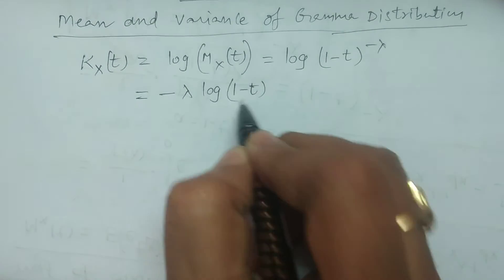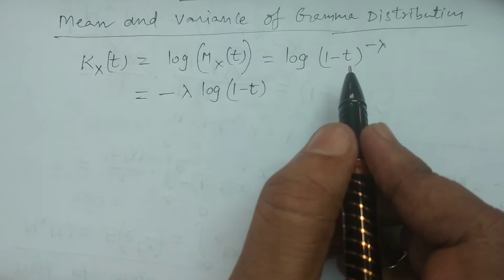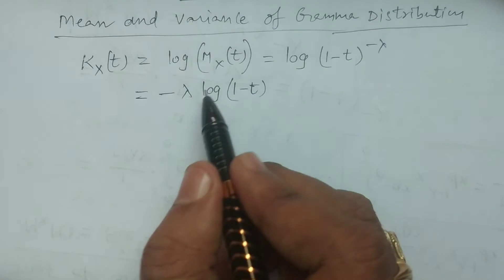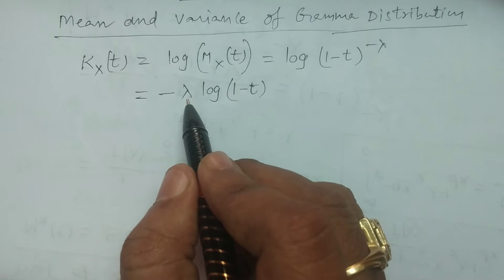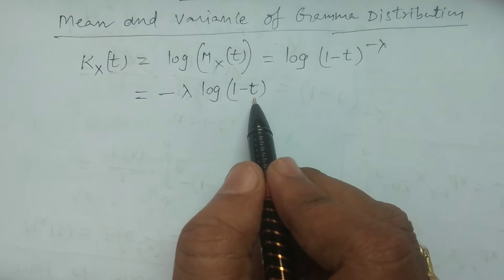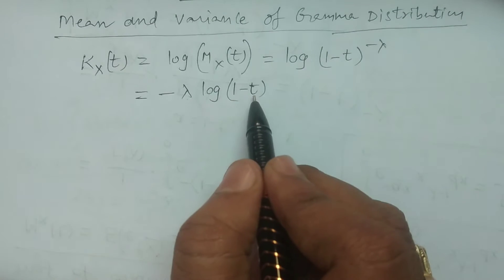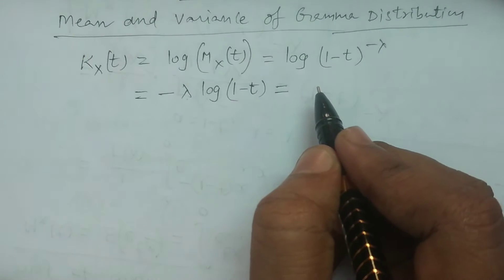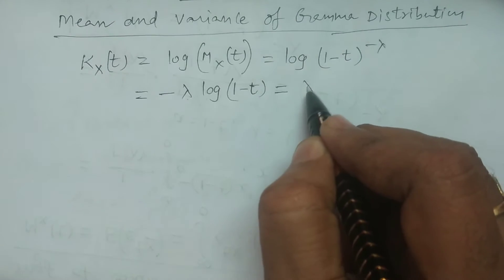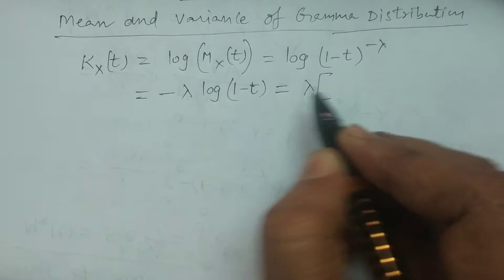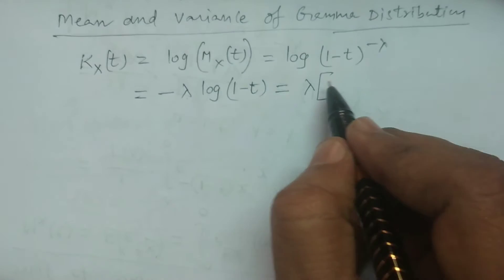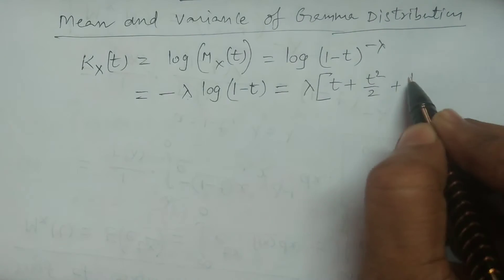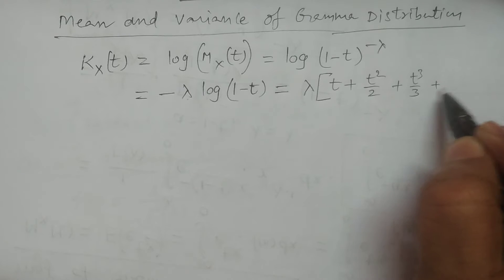Because log of m raised to the power n can be expressed as n times log m. That is, log(1 - t) raised to minus lambda equals minus lambda times log(1 - t). Now, using the formula: minus log(1 - x) = x + x²/2 + x³/3 + and so on. Therefore, lambda multiplied by minus log(1 - t) equals t + t²/2 + t³/3 + and so on.